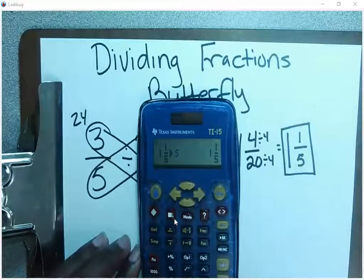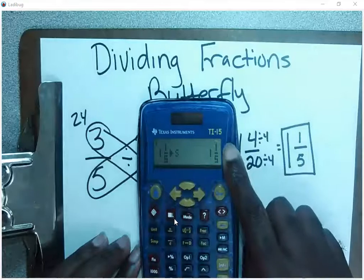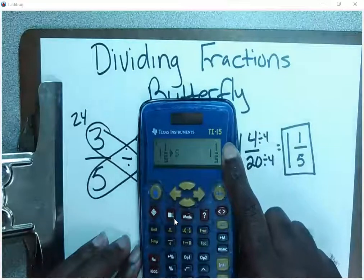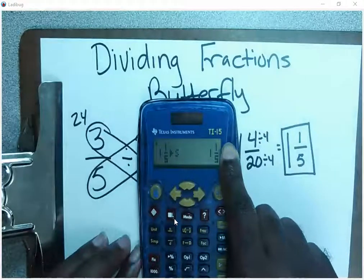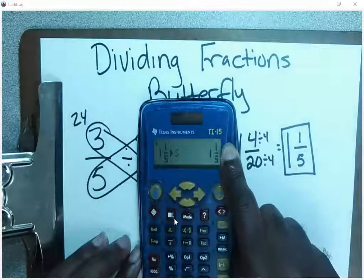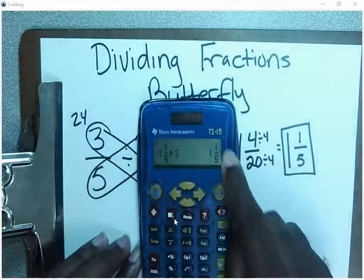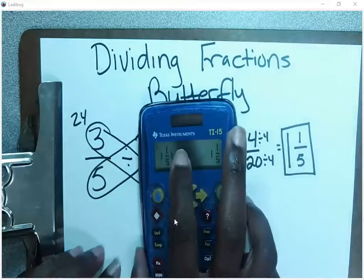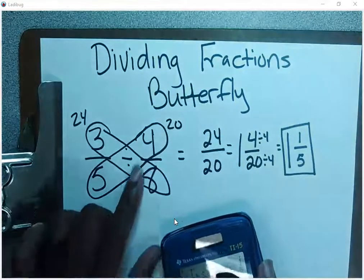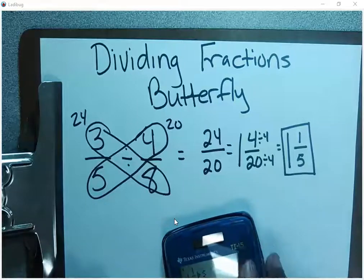Also, a quick rule to remember: if one is ever your numerator, one cannot be simplified any smaller than one. So if one is ever your numerator, that means you cannot be simplified anymore. So in other words, three-fifths divided by four-eighths would give me the answer of one and one-fifth.